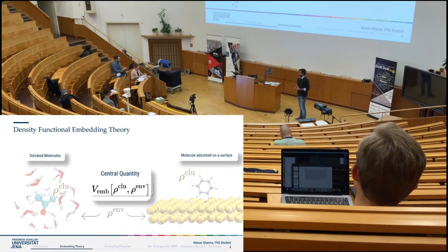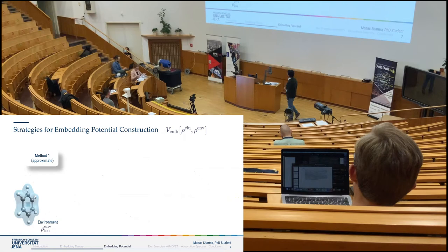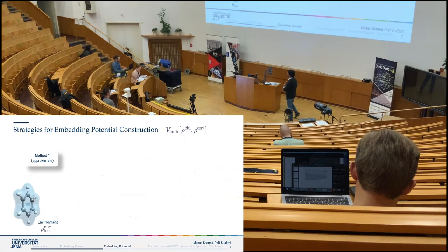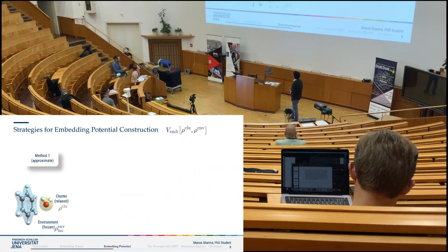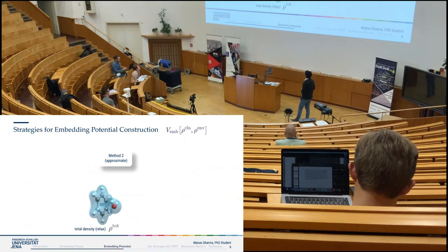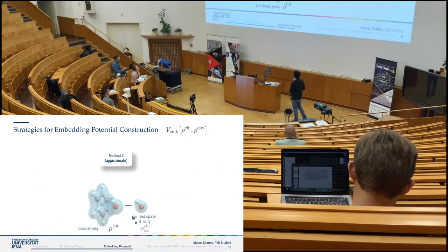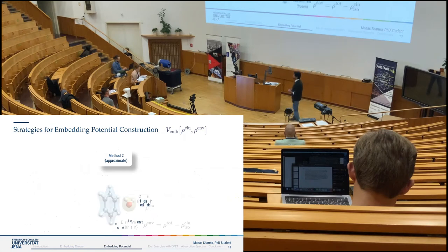There are several strategies to construct this embedding potential. In Method 1, I relax the density of the environment — using benzene as a model — in isolation, plug this density into the embedding potential, and relax the cluster density in the presence of this embedding potential. In Method 2, I take the total system at once, relax the density using a low-level method, subtract the isolated cluster density to get the environment density, and relax the cluster density in the presence of this embedding potential.